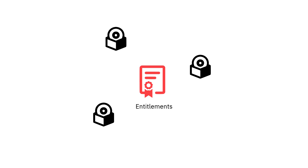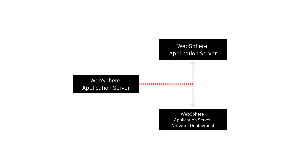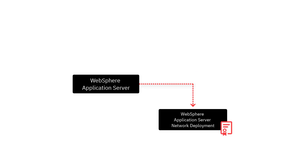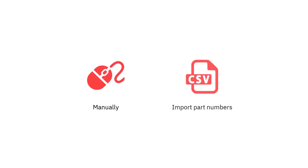Software entitlements. You can facilitate automated bundling by defining your software entitlements. Software entitlements are products that you own and thus are allowed to install and use. These can be products for which you purchase licenses or ones that you obtained free of charge. When components are discovered, License Metric Tool tries to assign them to entitled products in the first place, which highly increases the accuracy of the automatic classification. You can define your software entitlements manually or by importing part numbers that also mark products as entitled.